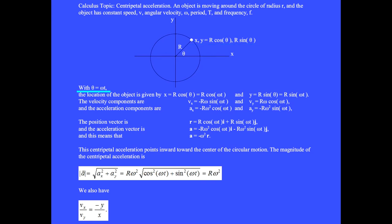With theta equals omega t, the location of the object is given by x equals r cosine omega t and y equals r sine omega t. The time derivatives of these give velocity components.